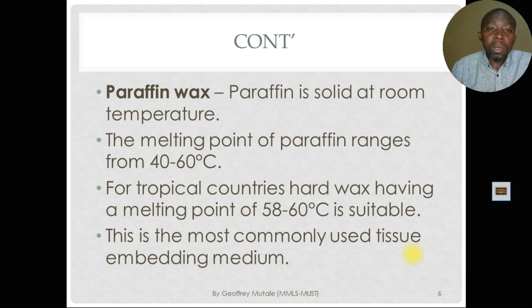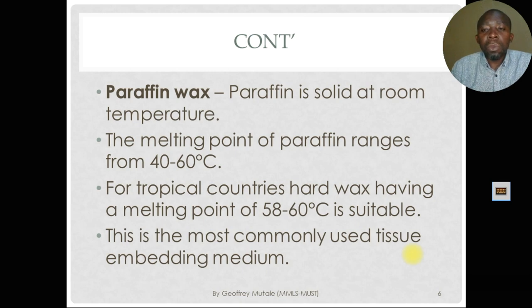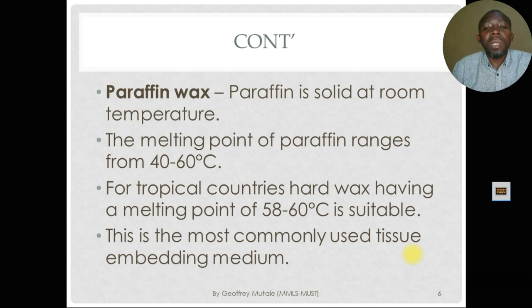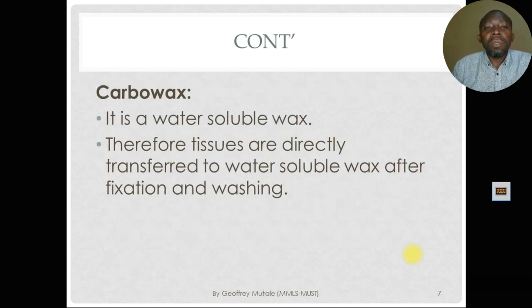Paraffin wax is solid at room temperature with a melting temperature ranging between 40 and 60 degrees centigrade. For tropical countries, paraffin wax with a higher melting point of 58 to 60 degrees is suitable, because our temperatures are a little higher compared to countries like those in Europe. Using paraffin wax with a low melting point may not solidify properly, meaning we may not have a tissue block that is hard enough. This is the most commonly used tissue embedding medium in most pathology labs.